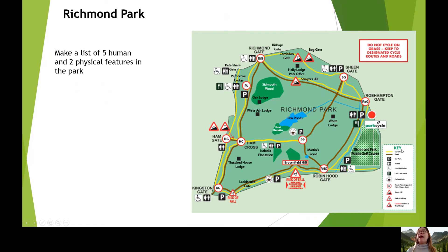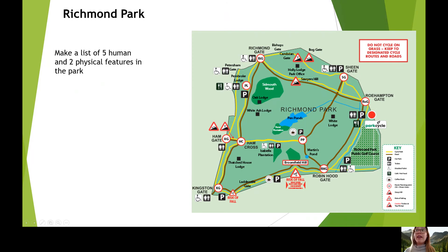Here we can see a key, which tells us what a symbol stands for if we don't know. And we can see a 'do not cycle on grass' sign — keep to designated cycle routes and roads. Why do they have that warning? Well, it's to make sure that cyclists don't run into pedestrians, or even worse, into deer. And also, if everyone cycled on non-cycle paths, that would erode the beautiful grassland.